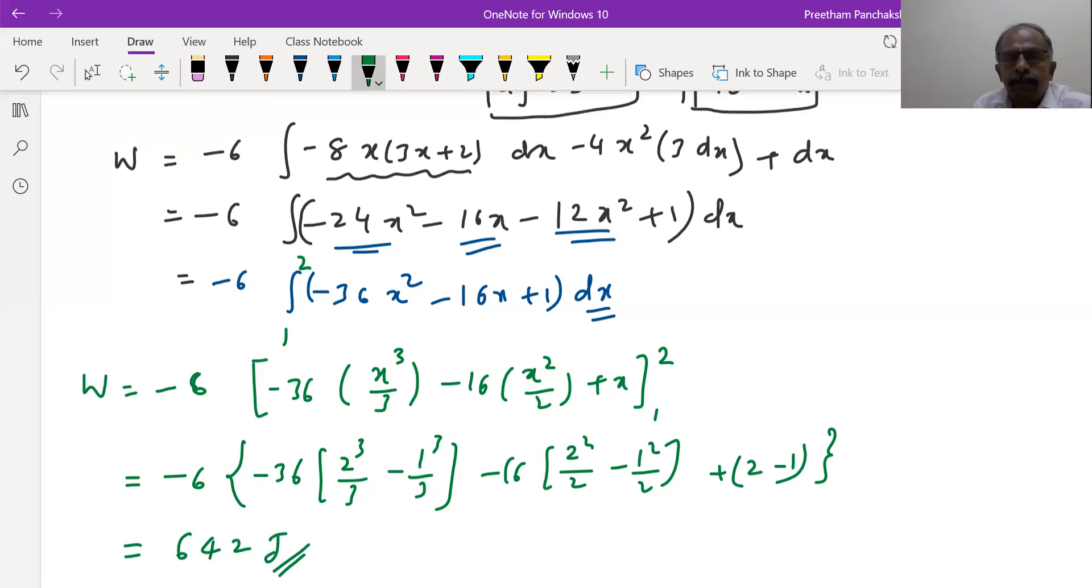It could be 642 joules. This is the work done in moving the charge 6 Coulombs from given point to the final point.